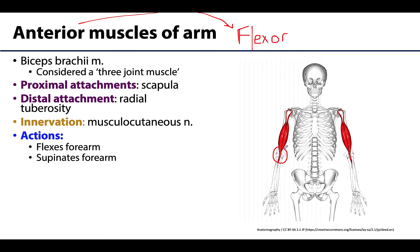We'll start with the most superficial muscle in the anterior compartment: the biceps brachii. The biceps brachii is considered a three-joint muscle, meaning its tendons will cross three separate joints. Unlike the deeper brachialis, the more proximal tendons cross the shoulder joint, and the distal tendon crosses not only the elbow joint (the humeral-ulnar joint) but also the proximal radial-ulnar joint.